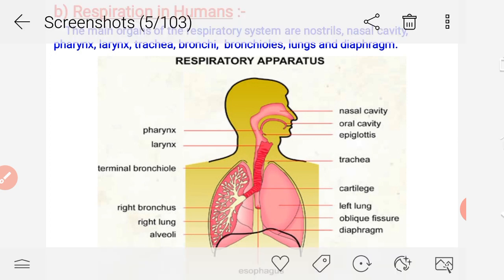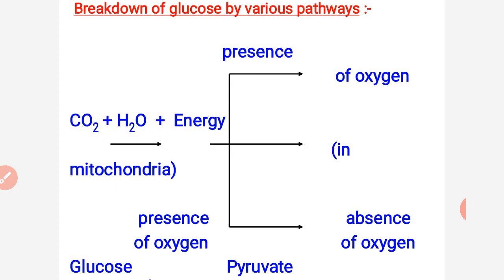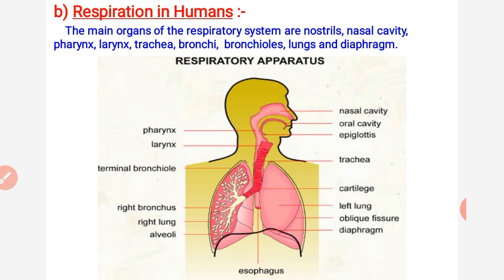Earlier we discussed the common mode of respiration in all organisms, but today we are going to study only the human respiratory system, because humans are a very developed and modified organism among all. We have also discussed how the breakdown of food takes place inside cells in the absence or presence of oxygen. Today we start the human respiratory system — we have a well-developed system in which the lungs are the main respiratory organ.